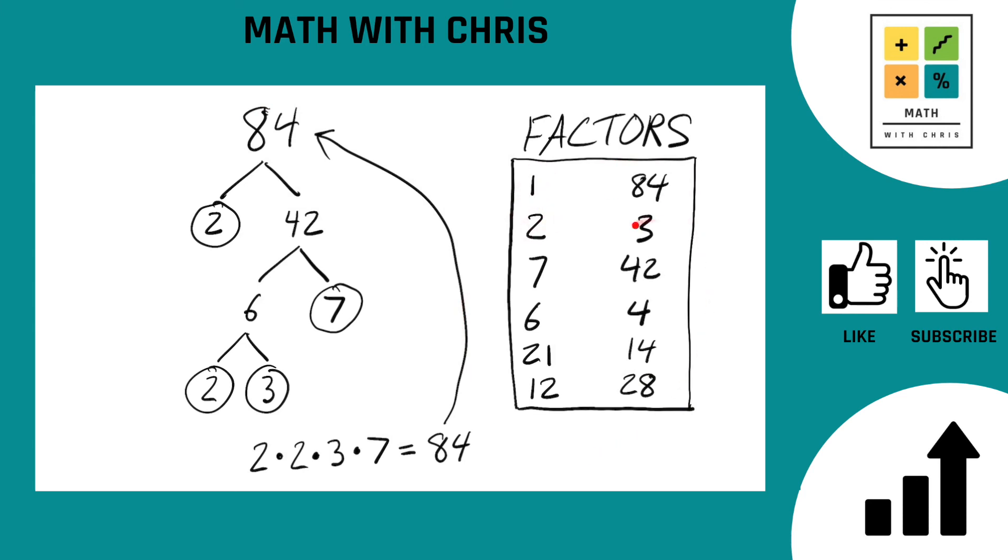They are in order: 1, 2, 3, 4, 6, 7, 12, 14, 21, 28, 42, and 84.